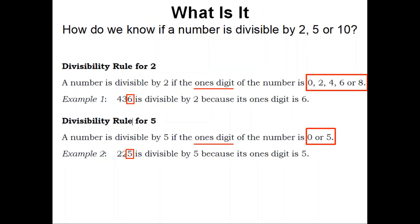Let's move on to What Is It. How do we know if a number is divisible by 2, 5, or 10? Divisibility rule for 2: A number is divisible by 2 if the 1's digit of the number is 0, 2, 4, 6, or 8. Example 1: 436 is divisible by 2 because its 1's digit is 6. Divisibility rule for 5: A number is divisible by 5 if the 1's digit of the number is 0 or 5. Example 2: 225 is divisible by 5 because its 1's digit is 5.